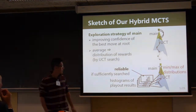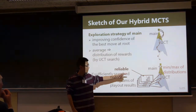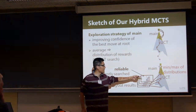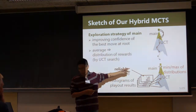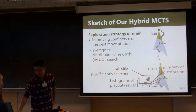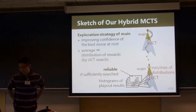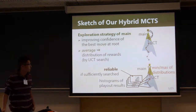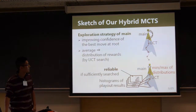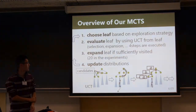In the main tree, a distribution of reward is updated by the mean or max of children's distributions. This update method is expected to alleviate the effect of variance. This is an overview of our MCTS.